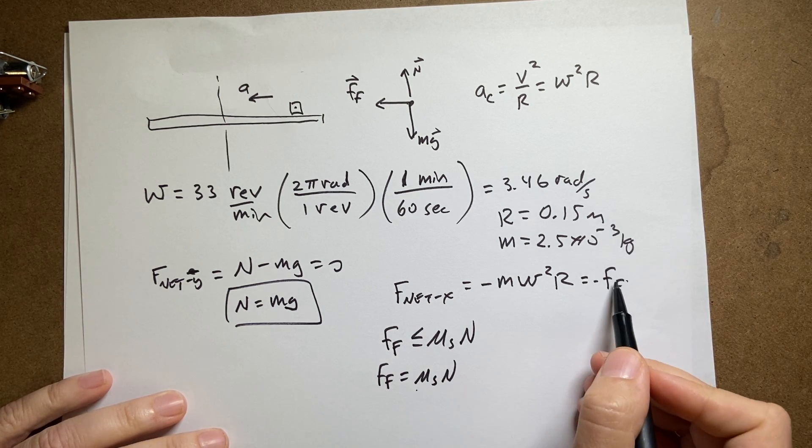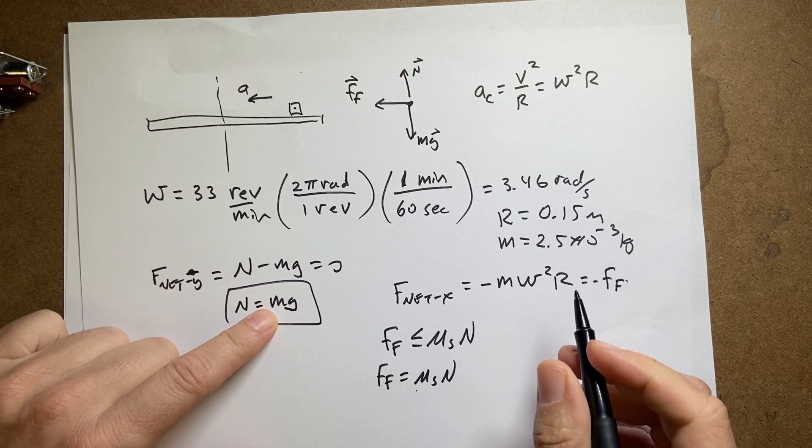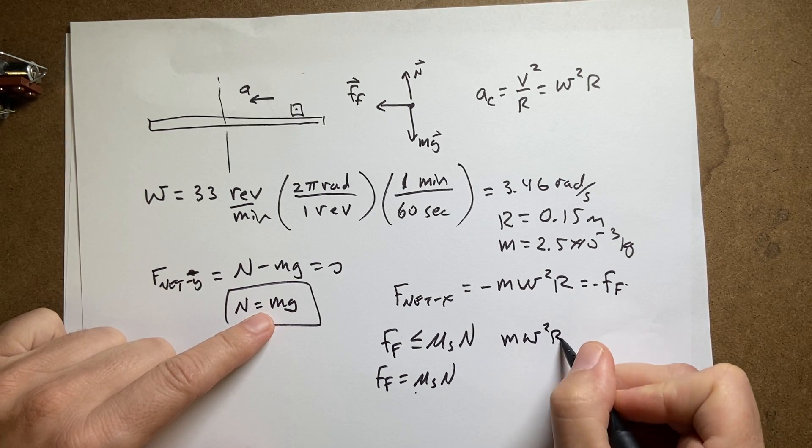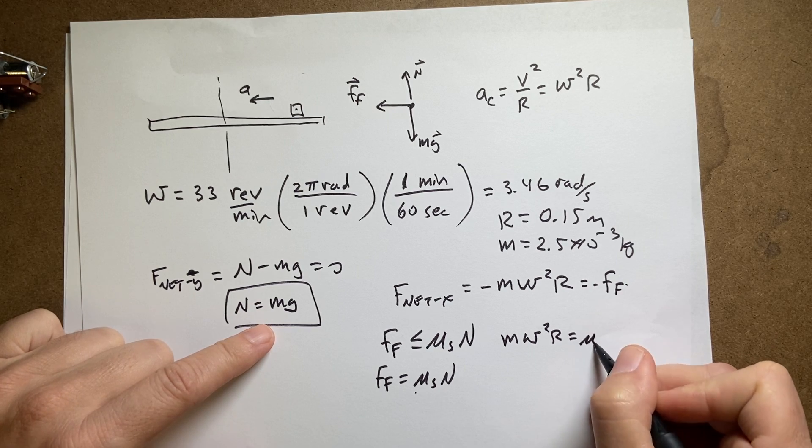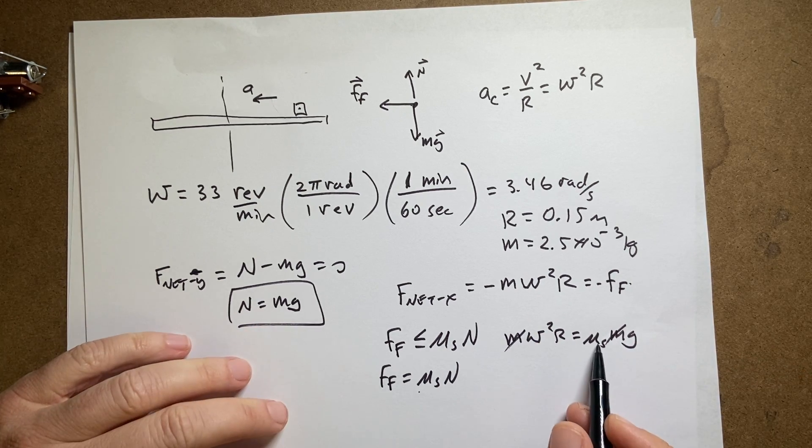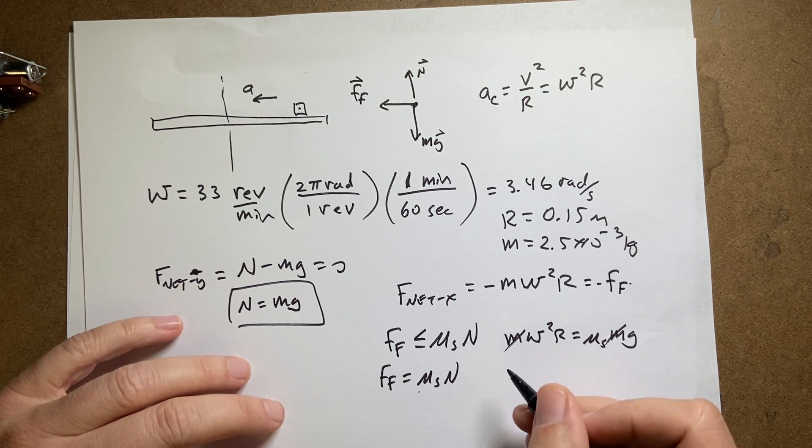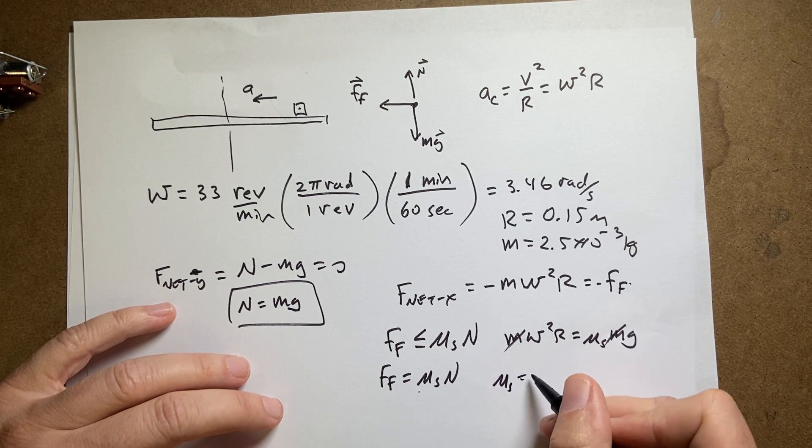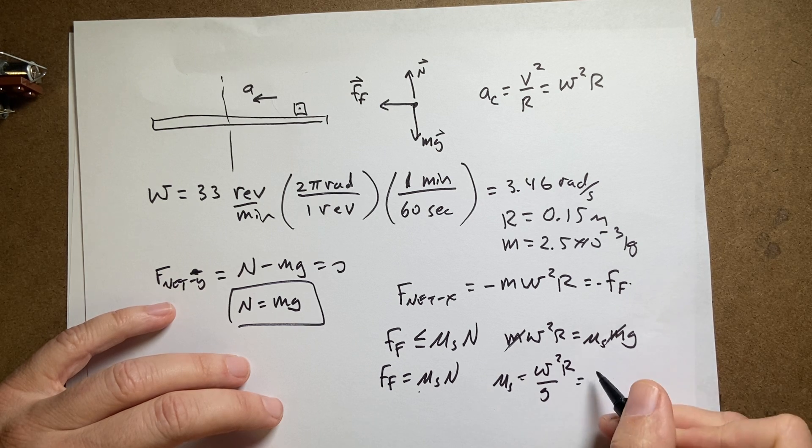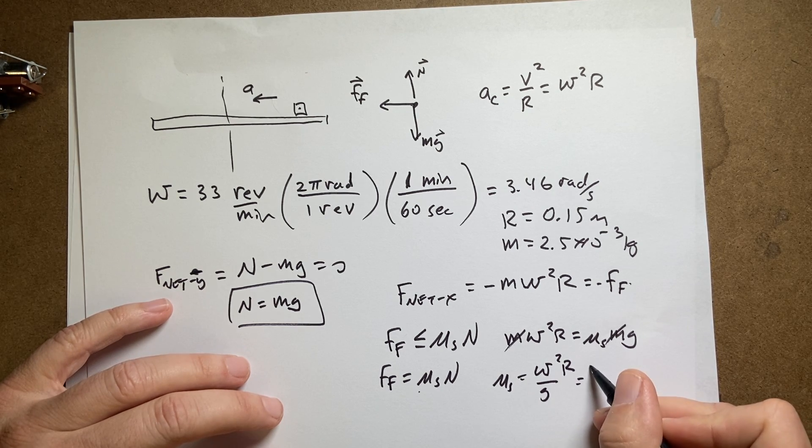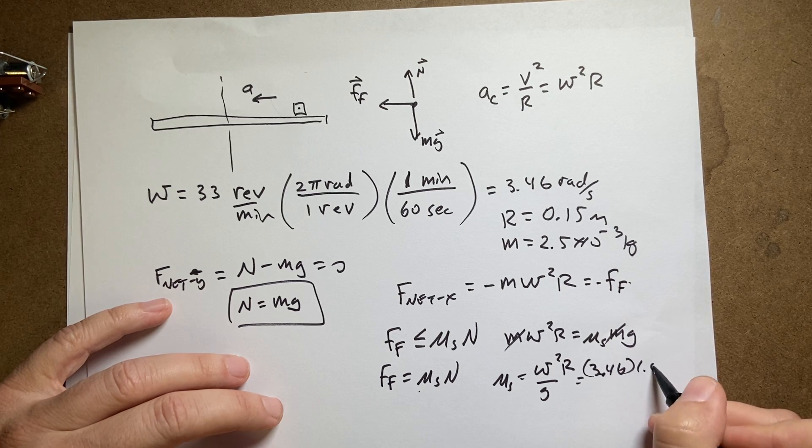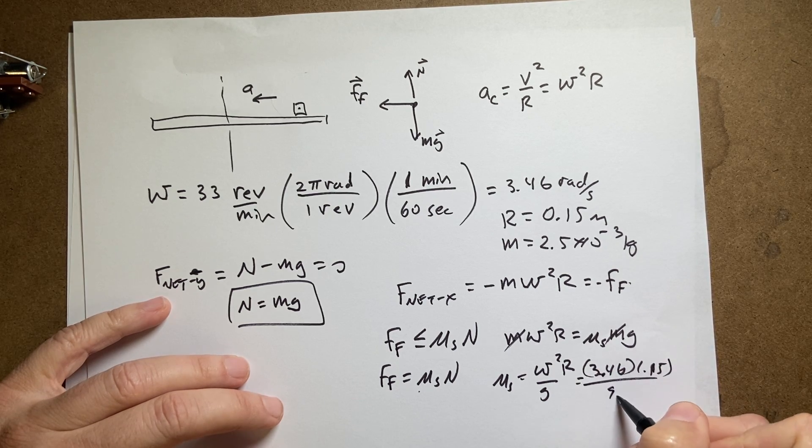So I can put this n up here along with mg for n and I get the negatives cancel, m omega squared r equals mu s mg. And the masses cancel. And then if I divide by g, I get mu s equals omega squared r over g. And that's going to be equal to 3.46 squared times 0.15 divided by 9.8.